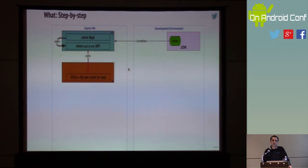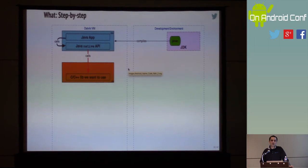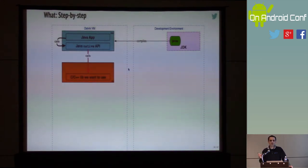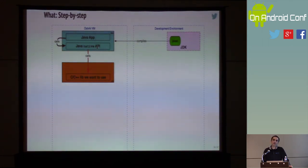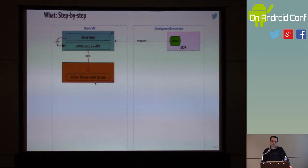The first step is to create a Java native API — we expose methods in Java world that are simply denoted with the keyword 'native', and you don't provide the body. It's like creating an abstract method or an interface where the implementation is going to come from elsewhere. Your Java app then calls this native API that's still written in Java.